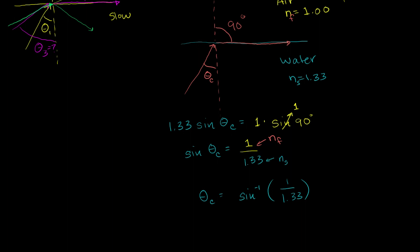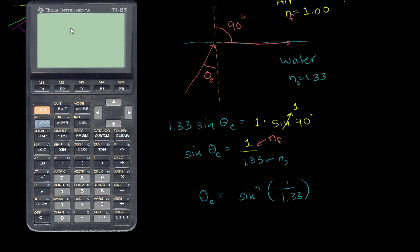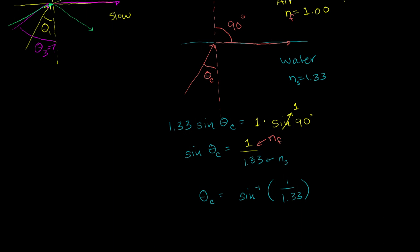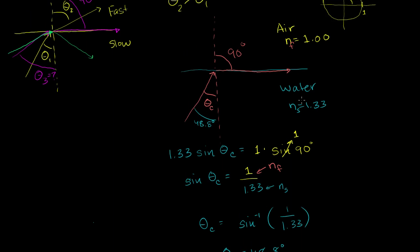Let's get the TI-85 out and find the inverse sine of 1 divided by 1.33. And we get 48.8 degrees. So our critical angle is 48.8 degrees. This tells us that if we have light leaving water at an incident angle of more than 48.8 degrees, it actually won't be able to refract — it won't be able to escape into the air; it's actually just going to reflect at that boundary. If you have angles less than 48.8 degrees, it will refract and be able to escape.